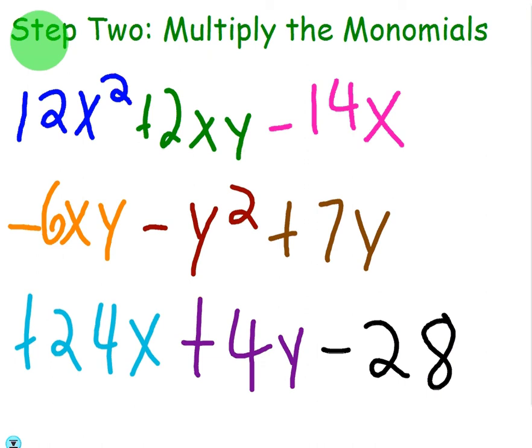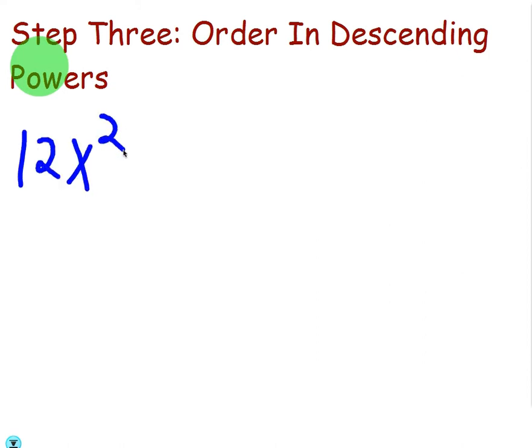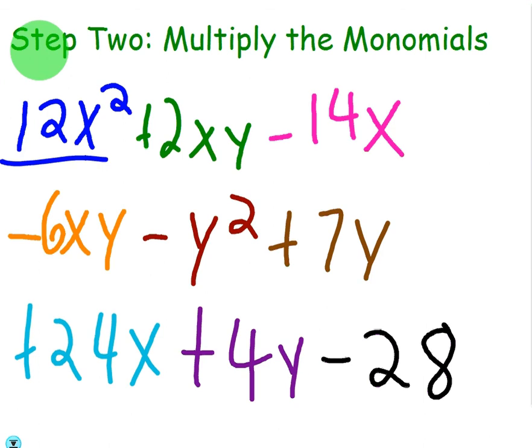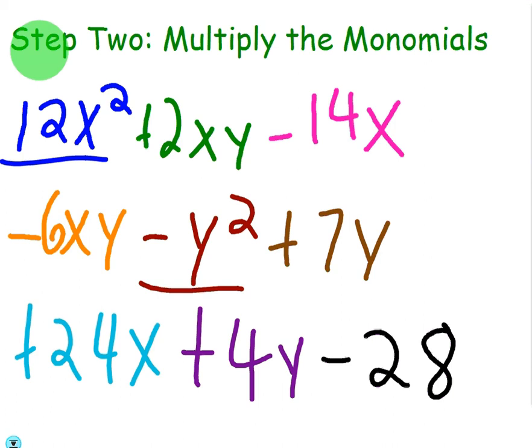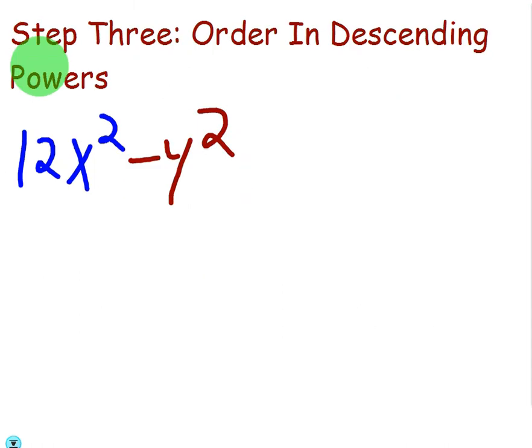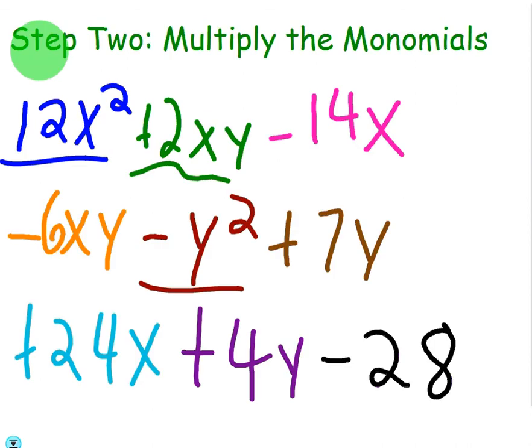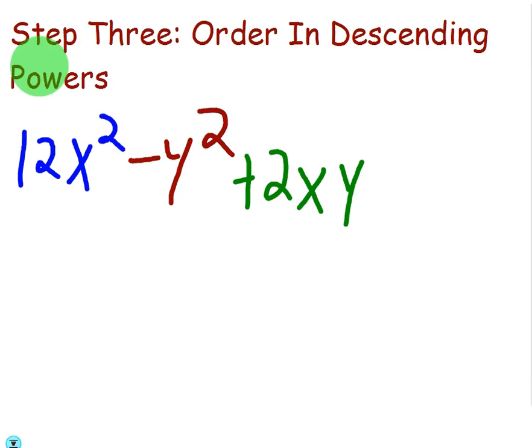Now I am going to go ahead and do step 3. When you have 9 terms, I think it's important to just go ahead and order them so you don't miss anything. So the biggest power here would be the x squared. So I am going to put the 12x squared first. Then go ahead and check that one off. Then I see a y squared. I am going to put that second. xy is kind of like a squared term because they both have an exponent of 1. So that would become a 2, technically. So in other words, I am actually going to put those next. So I am going to put plus 2xy next. And then minus 6xy.